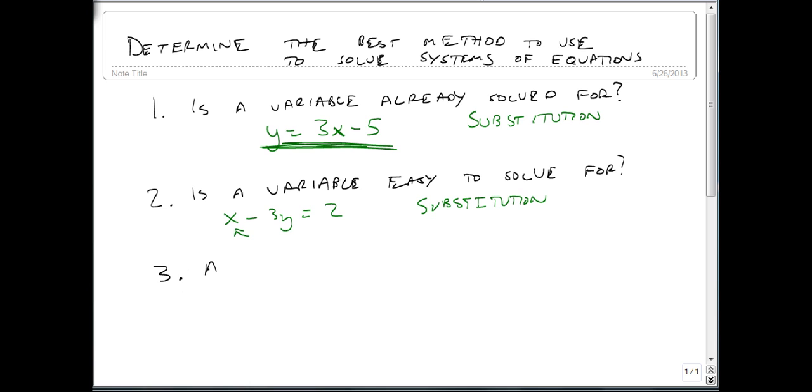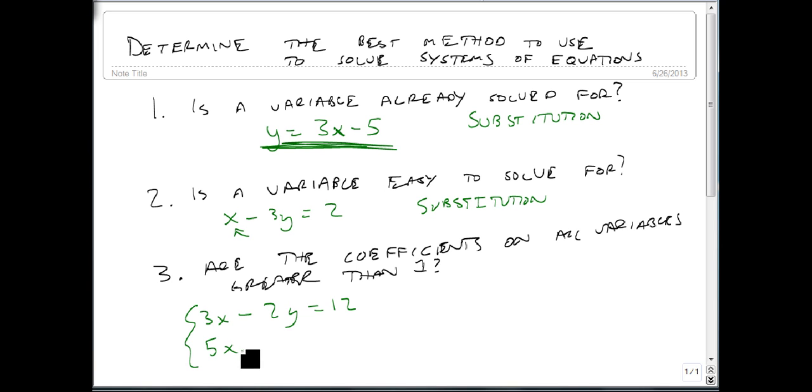Finally, are the coefficients on the variables, on all variables, greater than 1? For instance, suppose we have 3x minus 2y equals 12 and 5x plus 4y equals 7.